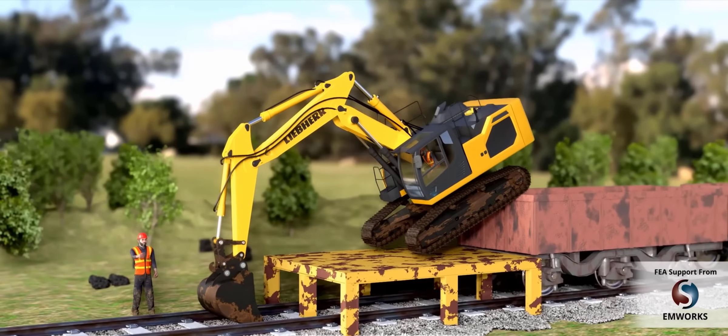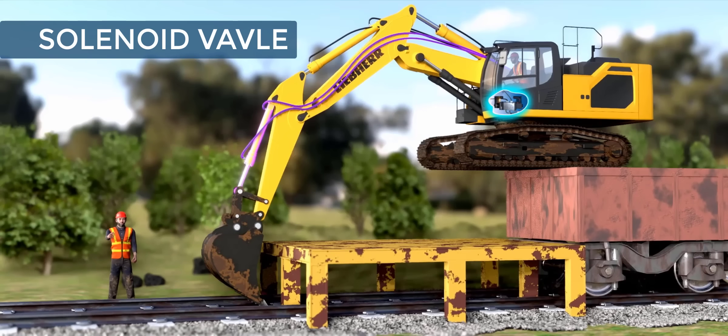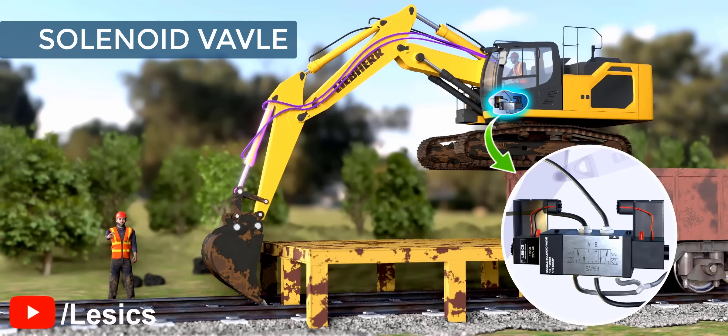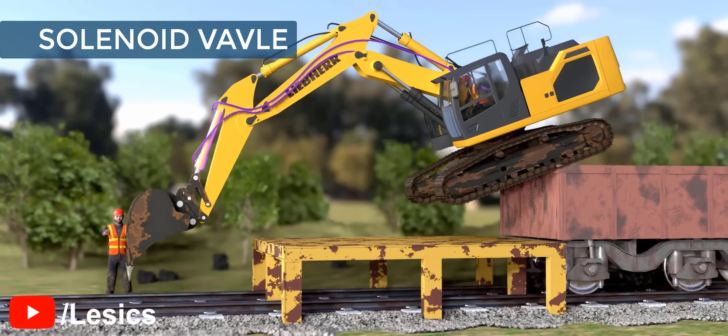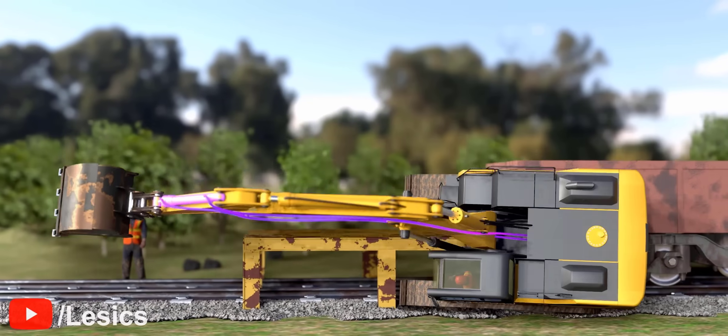This hydraulic excavator has a very interesting solenoid valve at the heart of its operation. The solenoid valve is so crucial that even minor wear and tear on its disc can cause the excavator to jam, leading to its failure.